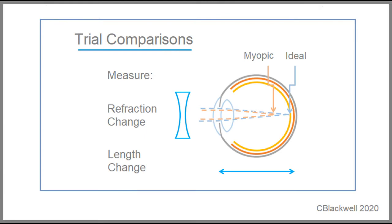We have discussed that myopia progress can be measured in two ways: refractive change and axial length change. Most studies report both, but ortho-keratology results can only be measured in axial length because the rigid lens directly modifies the cornea and thus the refraction.